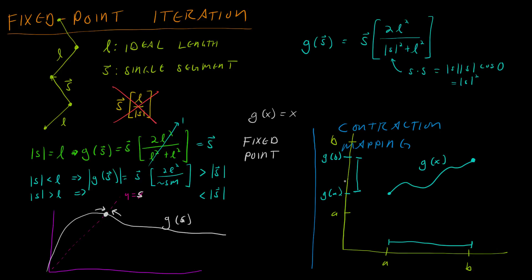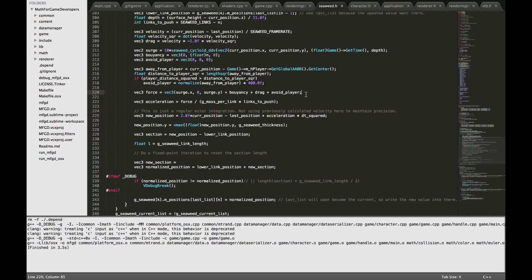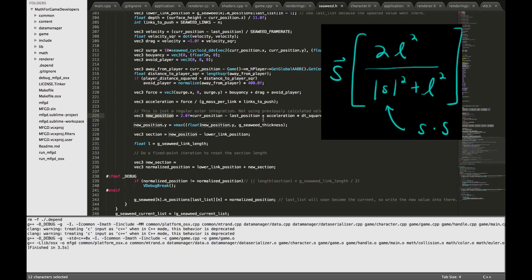So hopefully this will become more clear when we do the code section of the video, which we're going to go to now. So here we are in the section of the code that simulates the seaweed. You can see that we do some things with buoyancy and some forces and acceleration, and then we eventually calculate a new position for the seaweed, for a single section of the seaweed. But after we did all these physics calculations, there's no guarantee that the length of our new section of seaweed with the new position is the length that we want it to be, the seaweed link length. So we're going to do a fixed point iteration, and it's going to be exactly the formula that's on the screen now that we just talked about. So that is, and we're just going to do the parts in square brackets right now: 2L squared over, and then like we discussed, we can get the length of s squared by doing a dot product with itself.